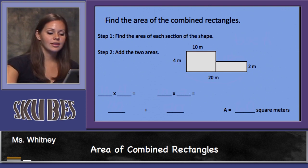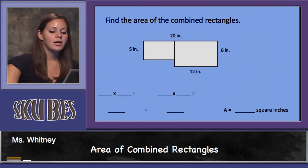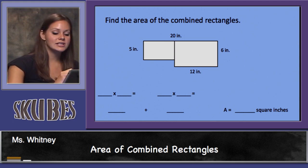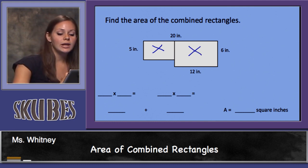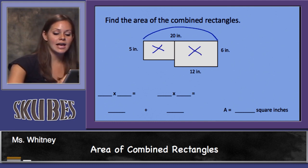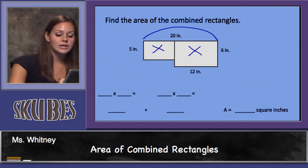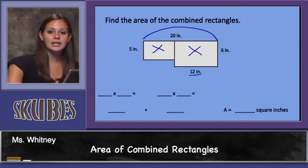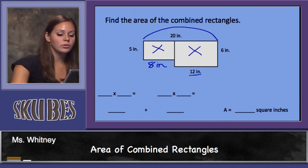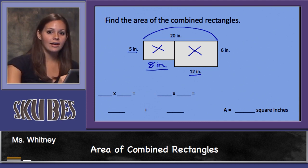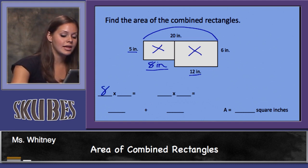Here's another example. We need to find the area of each section — the first rectangle and the second rectangle. We know that this entire side is 20 inches, and we can see that this portion is 12 inches, so we know that this portion must be 8 inches. I'll multiply 8 times 5 to find the area of the first rectangle.